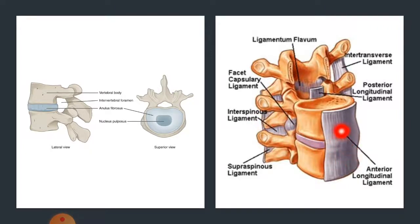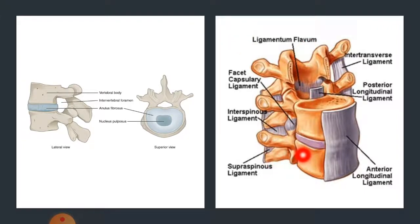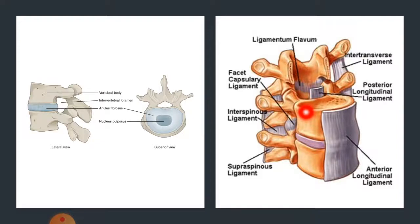The inter-transverse ligaments lie between the transverse processes. Key ligaments to remember: the ligamentum flavum, anterior longitudinal ligament, supraspinous ligament, inter-transverse ligament, and posterior longitudinal ligament. The posterior longitudinal ligament is responsible for keeping the intervertebral disc in close position.